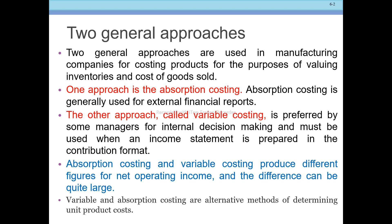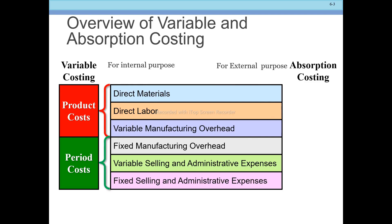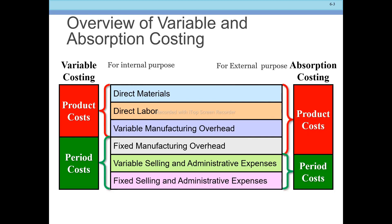Variable costing and absorption costing are alternative methods for determining unit product cost for the manufacturing company. The first one — variable costing — is used for internal purposes, and absorption costing is used for external purposes.